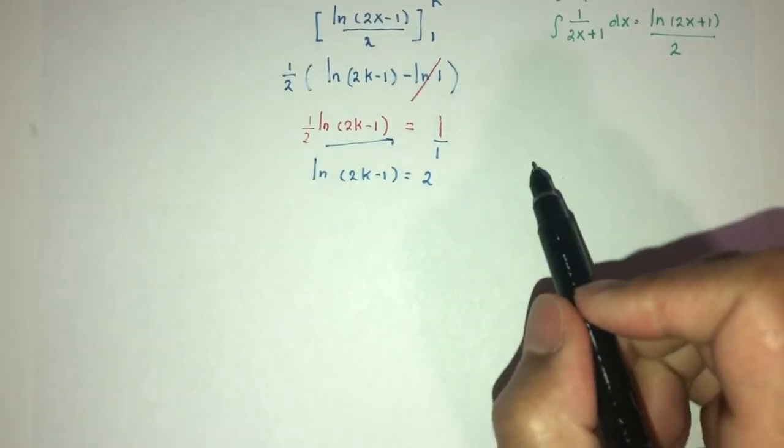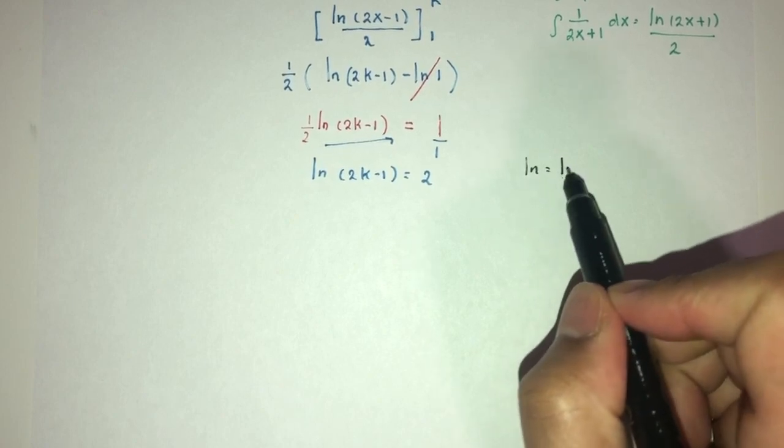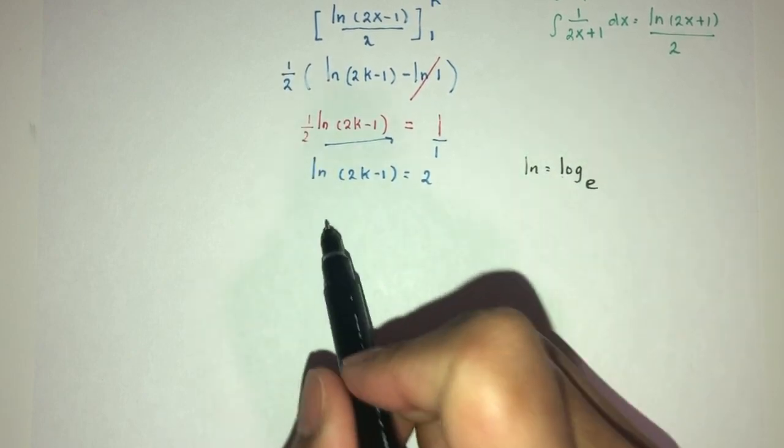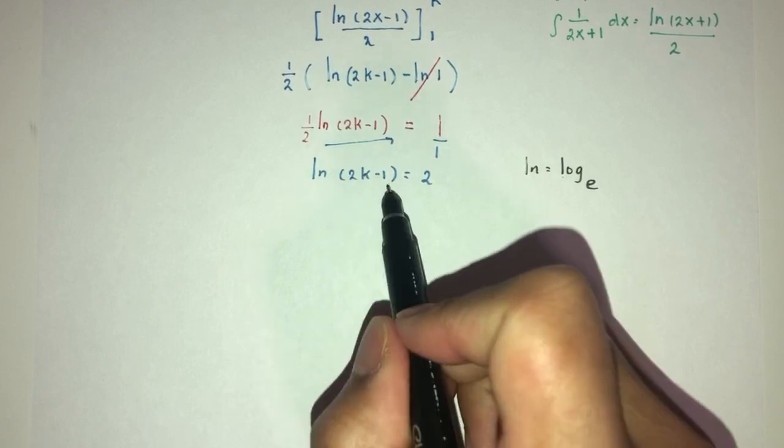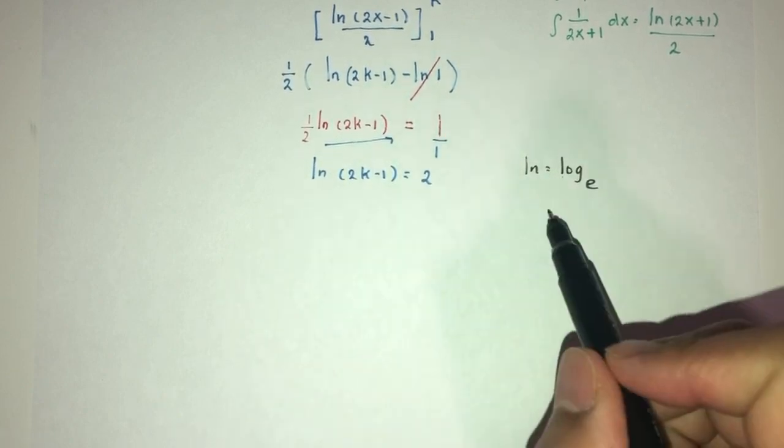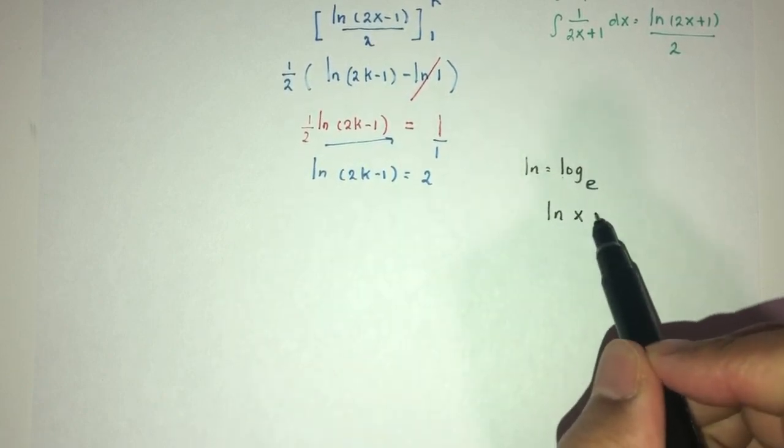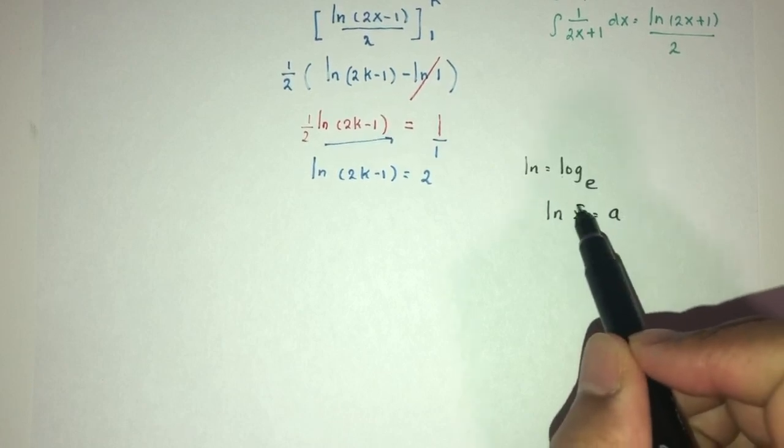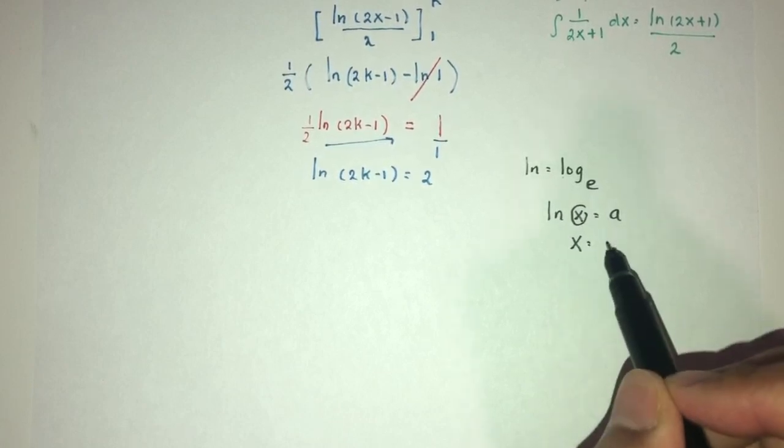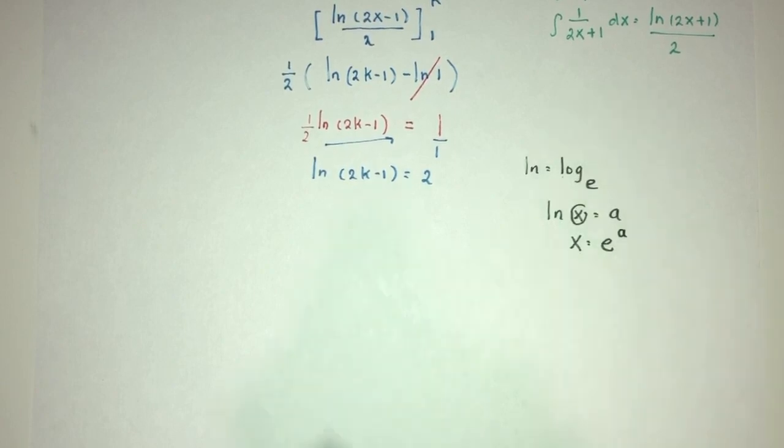Now, what is ln? ln is log to the base of e. To have the value inside, I have to send the base to this side. For example, let's say I have ln of x is equal to a. To find x, the value inside, I have to send the base to the other side.